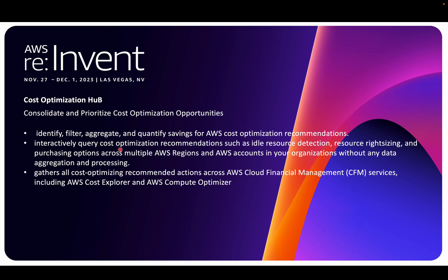It provides interactive query cost optimization recommendations, including idle resource detection — an important feature. If you're running instances that are idle and just incurring cost, this service will help identify them so you can get rid of idle resources or schedule them: stop EC2 during non-production hours and start it again during production hours. It also helps with right-sizing for EC2 and Lambda.